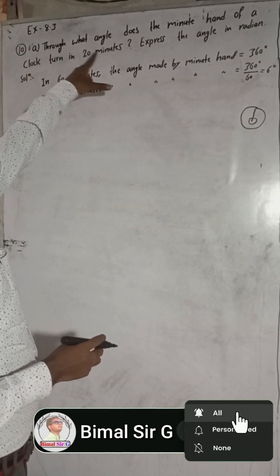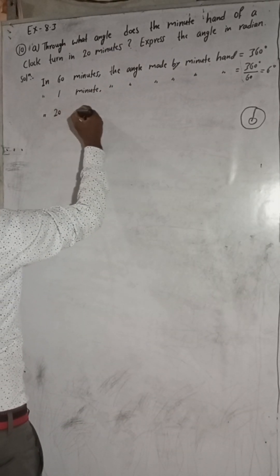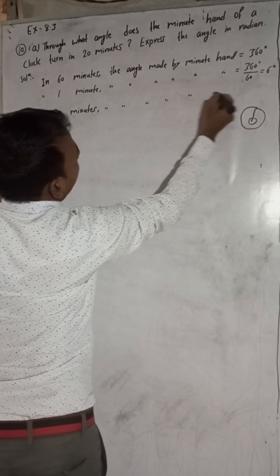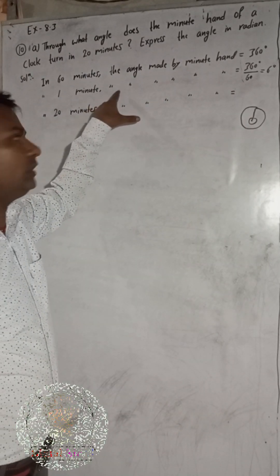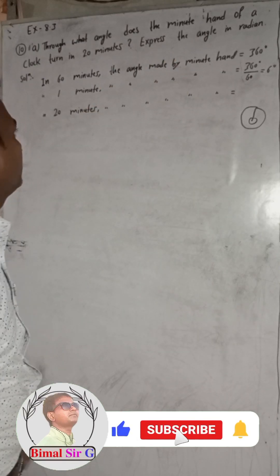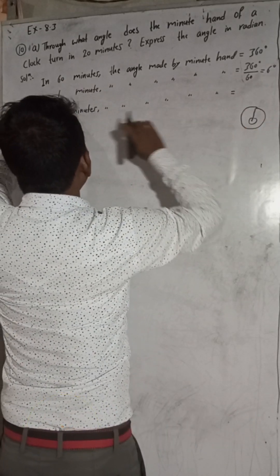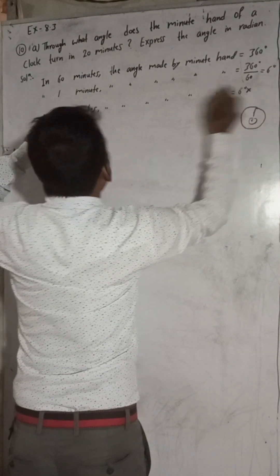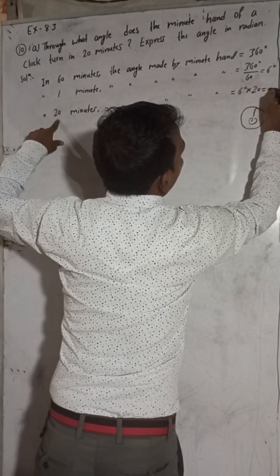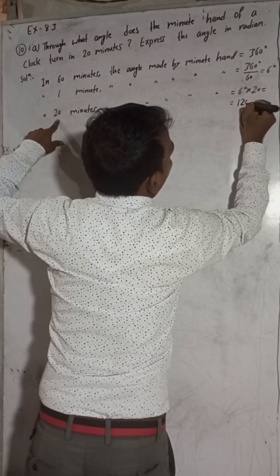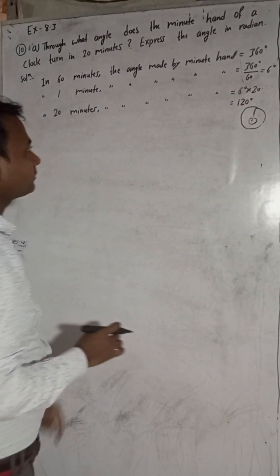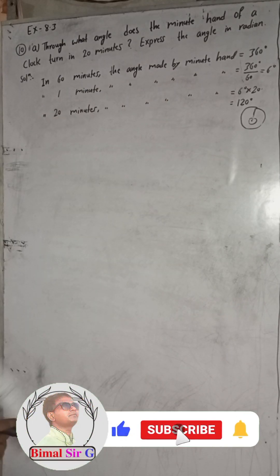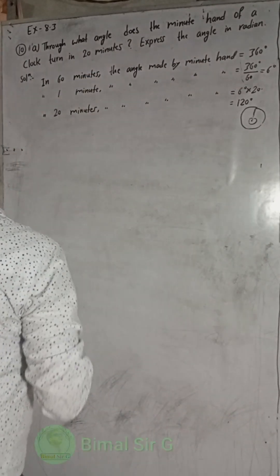In 20 minutes we have to find the angle made by the minute hand. One minute is 6 degrees, so in 20 minutes — more degrees — for more we have to multiply. We have to multiply this 6 degrees by 20, so this will be 6 times 20 which is 120 degrees. So in 20 minutes the angle made by the minute hand will be 120 degrees. But the question says to express the angle in radian.